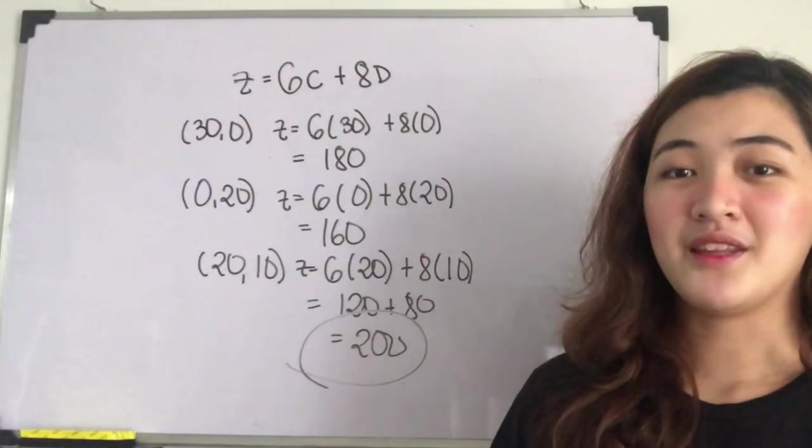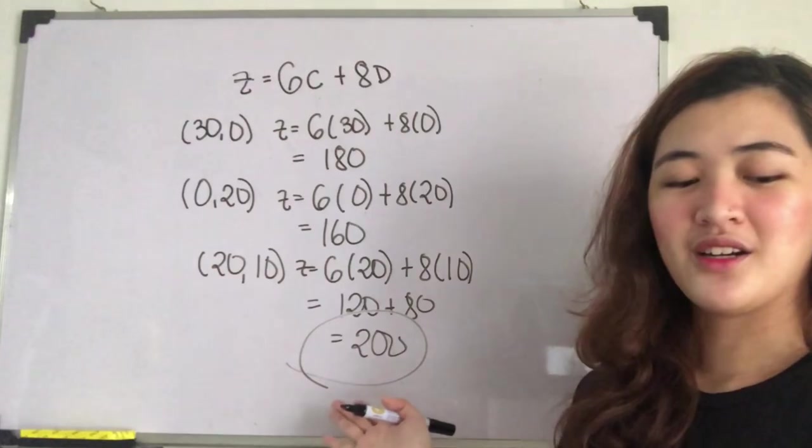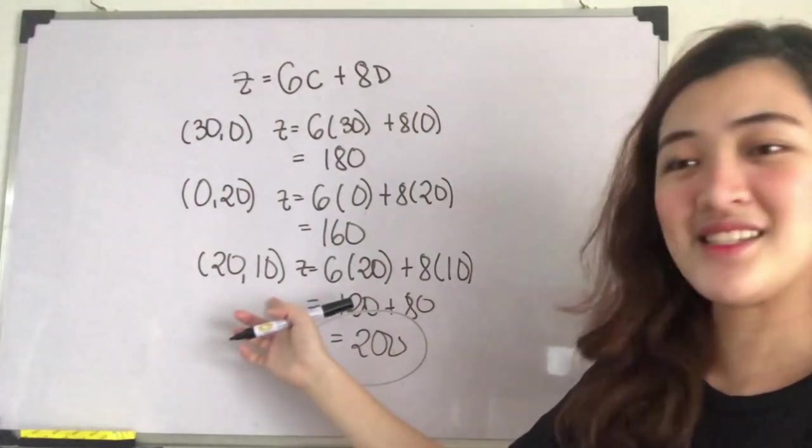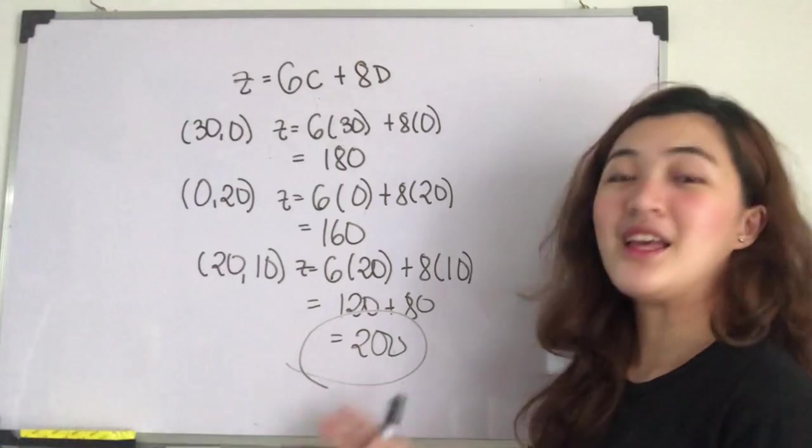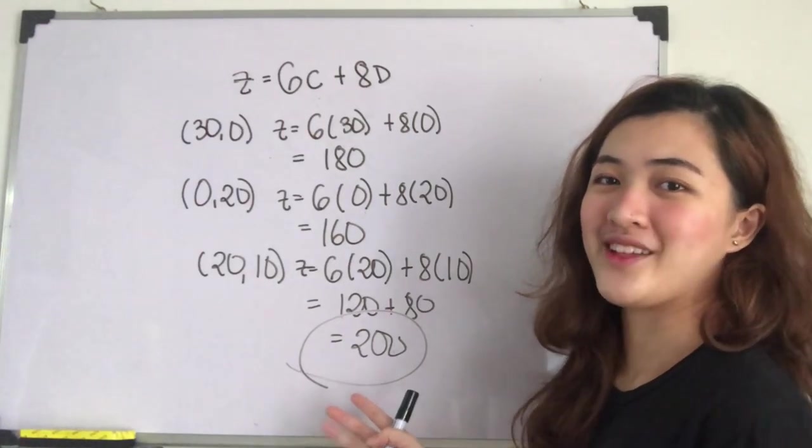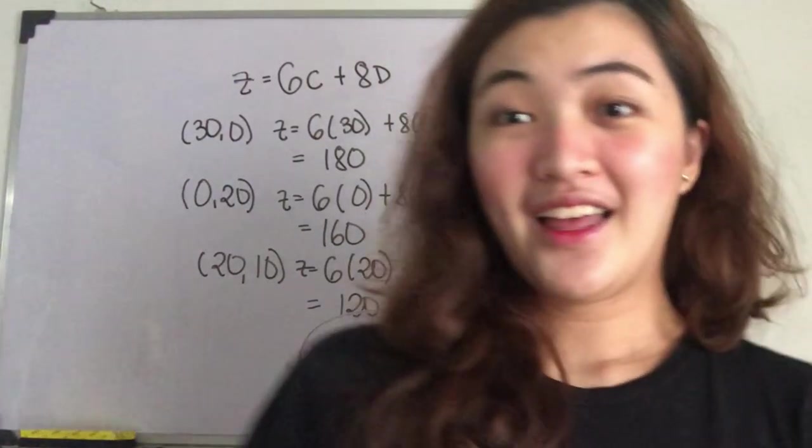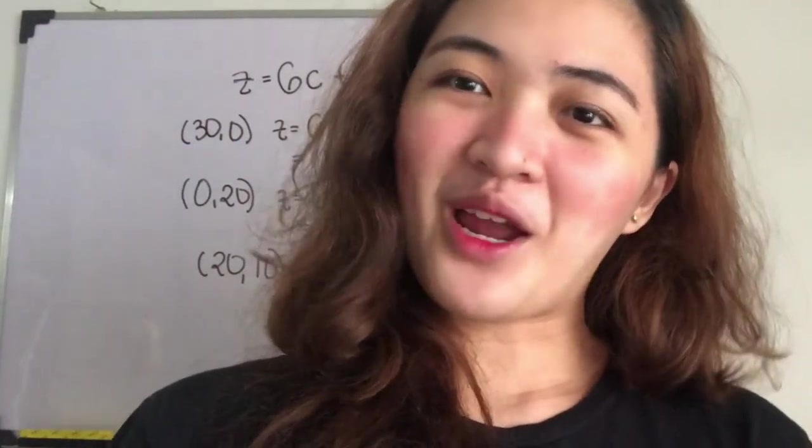So the optimal combination, as you can see from here, is the 20Cs and 10Ds. This will give us the highest possible profit. And that's it for linear programming. And thank you so much for having me today.